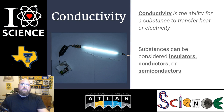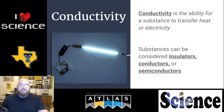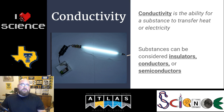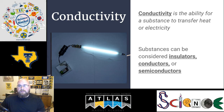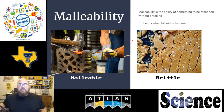Next we have conductivity — the ability for something to transfer heat or electricity. There are three designations: an insulator, which is not a good material for transferring heat or electricity; a conductor, which allows electricity to travel very easily through it; and a semiconductor. We'll talk a little more about what semiconductors are in just a bit.